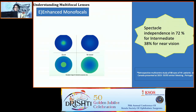Regarding enhanced monofocal lenses, asphericity in the anterior surface of the lens provides some intermediate addition as well. Without the patient experiencing glare or halos, spectacle independence can be expected in 72% of patients for distance and 38% for near vision.